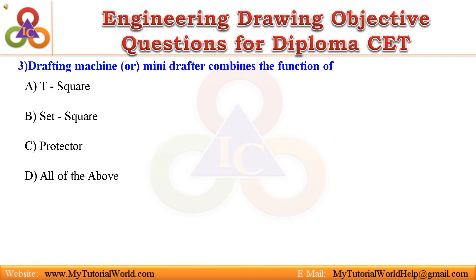Question 3: Drafting machine, or mini-drafter, combines the function of — A. T-square, B. Set square, C. Protractor, D. All of the above. Answer is All of the above.